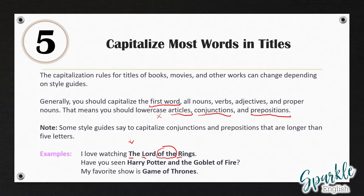Look here: 'Harry Potter and the Goblet of Fire.' We don't capitalize 'and' — it's a conjunction — 'the' because it's an article, and 'of' because it's a preposition. We only capitalize 'Harry Potter' and 'Goblet' because they're nouns. 'My favorite show is Game of Thrones.' Capitalize 'Game' and 'Thrones' because they are nouns and 'Game' is also the first word of the title. We do not capitalize 'of' because it's a preposition.